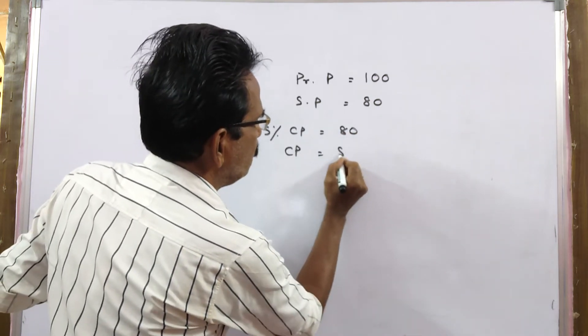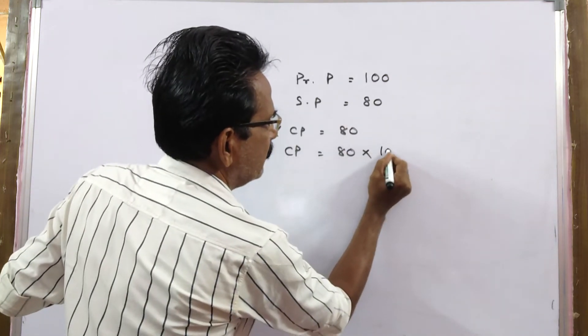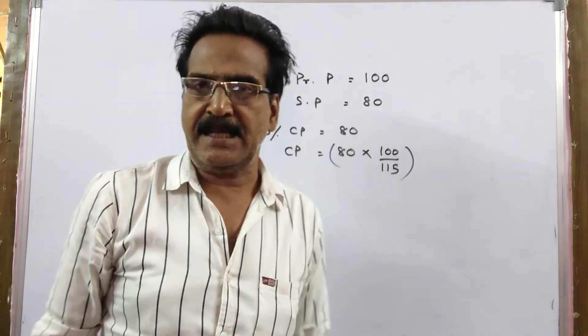So cost price is equal to 80 into 100 by 115. This is the cost price.